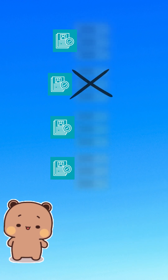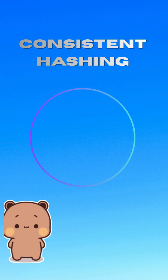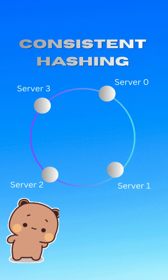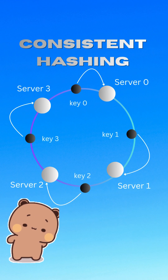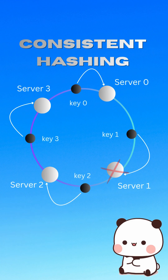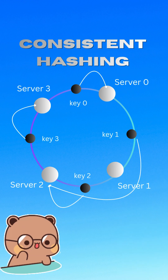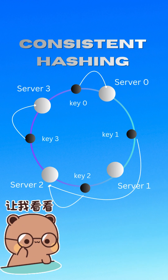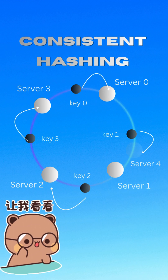So what's the fix? Consistent hashing. Take a line from 0 to a huge number, bend it into a circle — it's the hash ring. Hash the servers and place them on the ring. Hash the user keys too. A key just goes to the next server clockwise. Simple. And if a server dies? Only the keys that belong to that server move to its next neighbor — everything else stays the same. And if we add a new server, only a tiny slice of keys move.